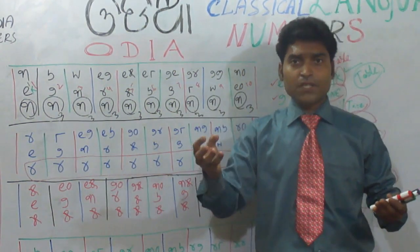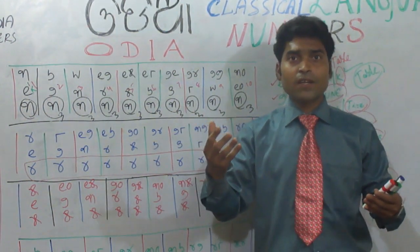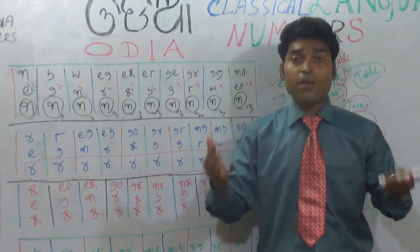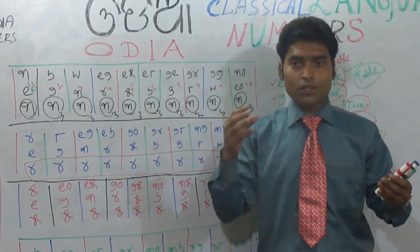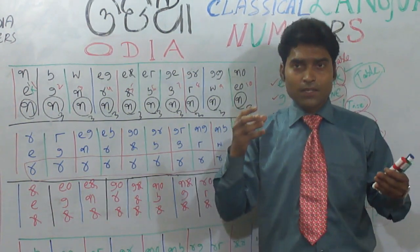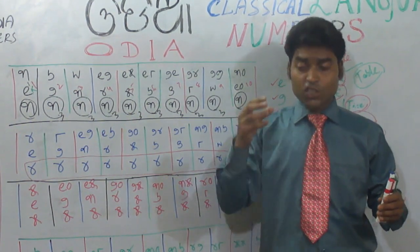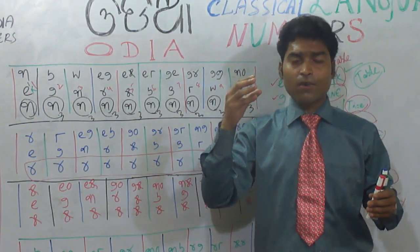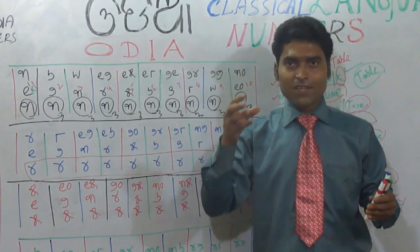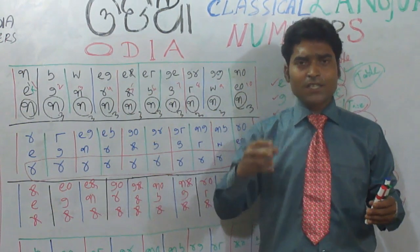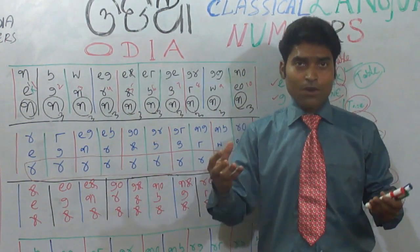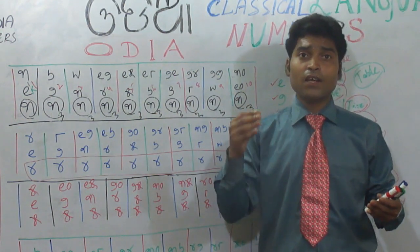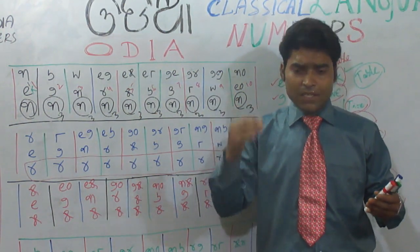Six times four is twenty-four. Six times five is thirty. Six times six is thirty-six. Six times seven is forty-two. Six times eight is forty-eight. Six times nine is fifty-four. Six times ten is sixty.